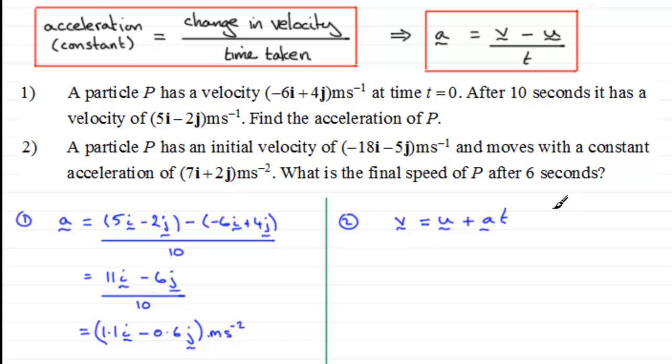So we just need to substitute our initial velocity. Our initial velocity was -18i - 5j, and to this we need to add our acceleration vector, which was 7i + 2j, and multiply this by the time taken, which was 6 seconds.